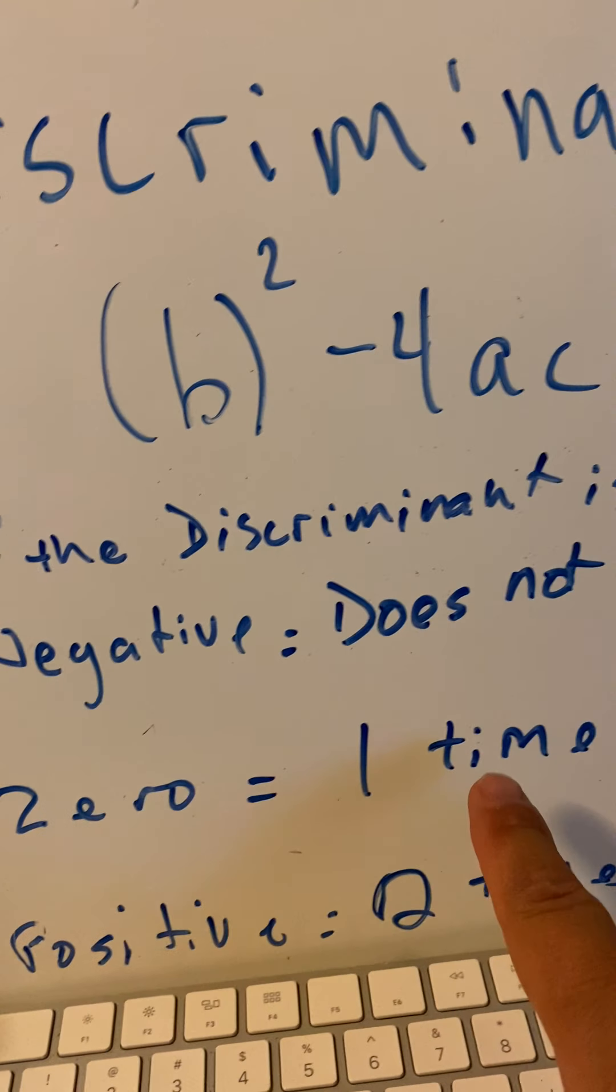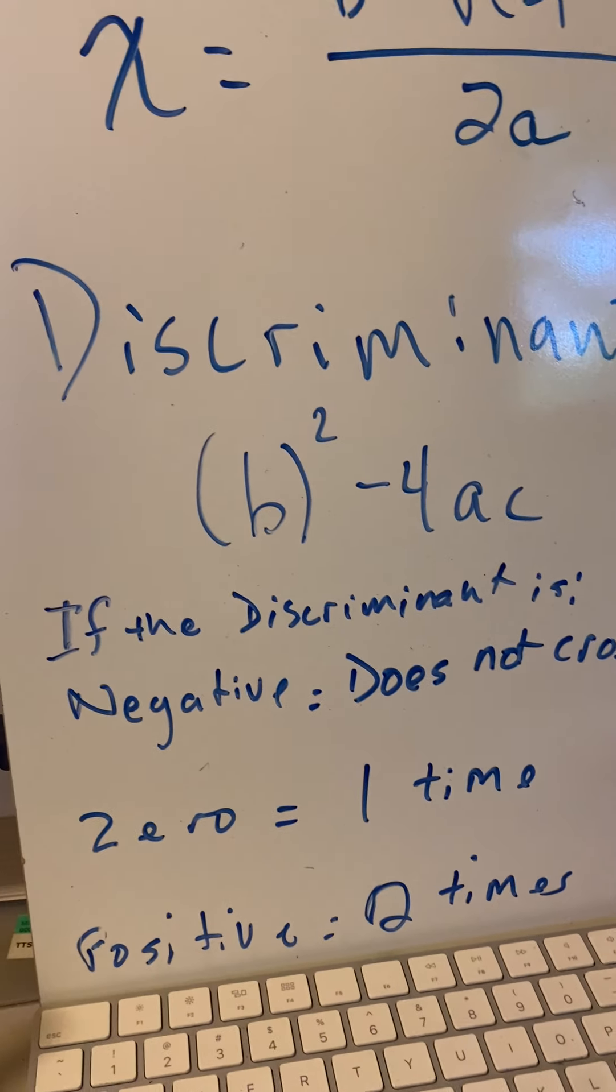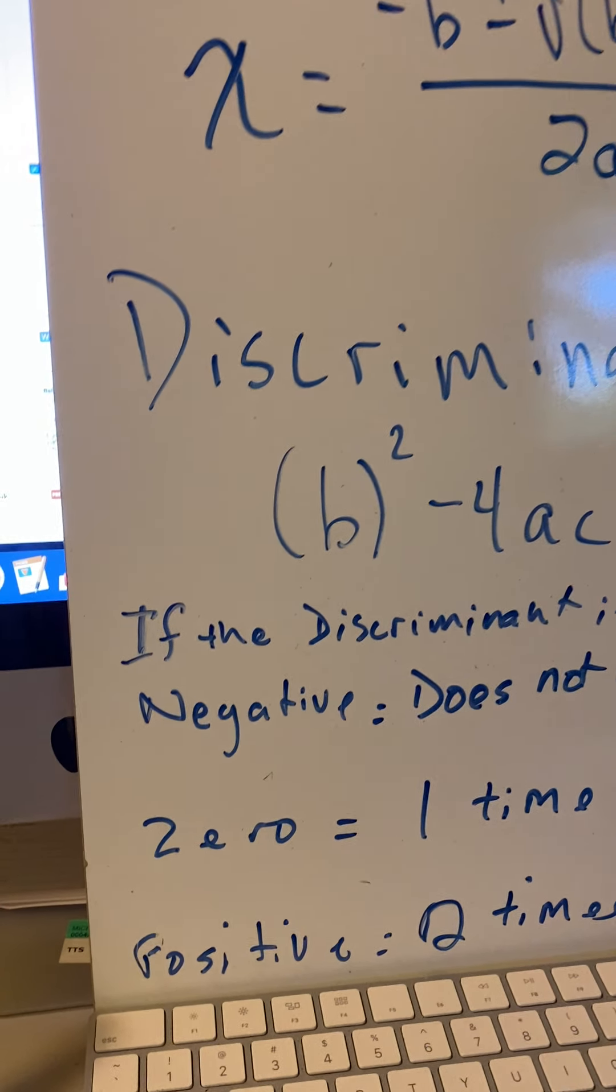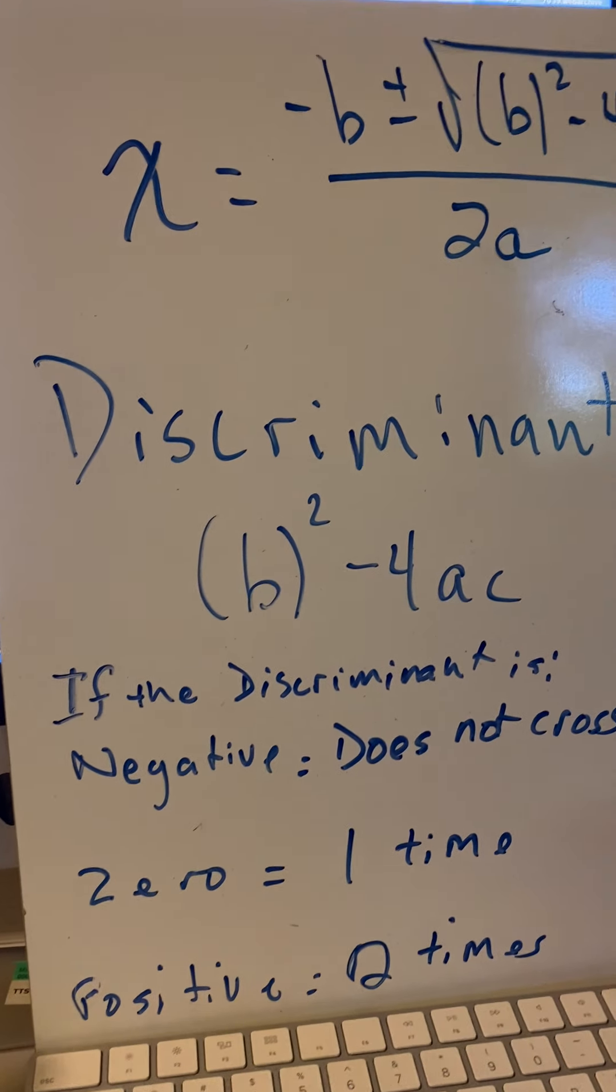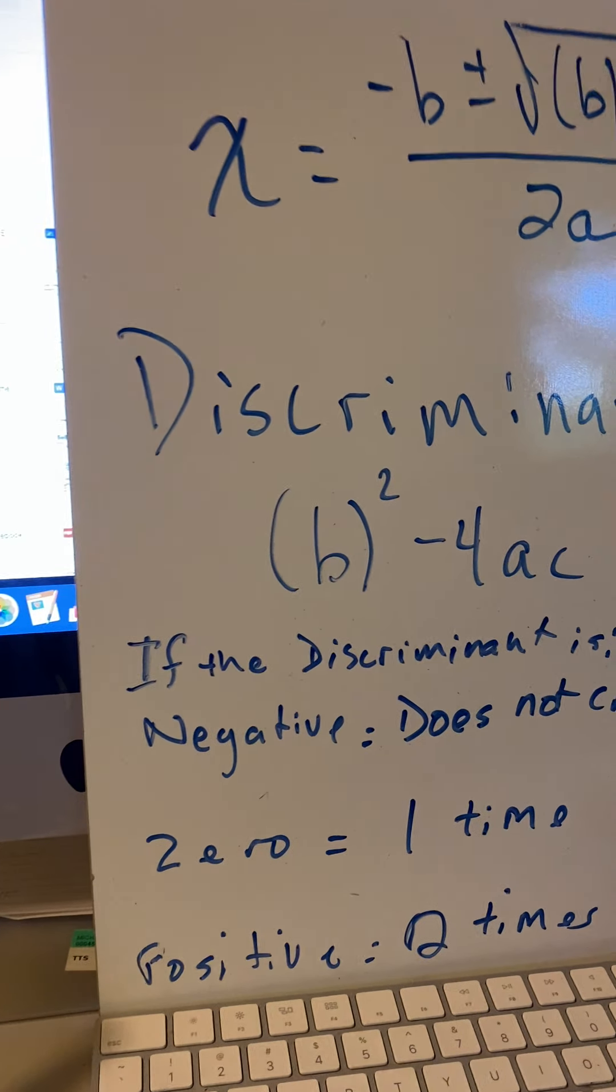If the discriminant is zero, it will cross at one time, which means it's on the x-axis. The vertex is on the x-axis. So it'll open up from the x-axis either upwards or downwards, or eventually when you get further into this sideways, left or right.